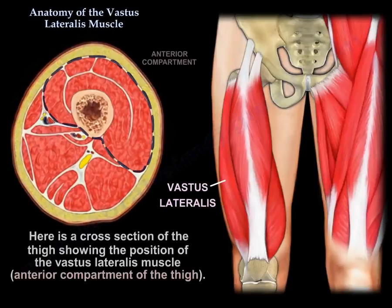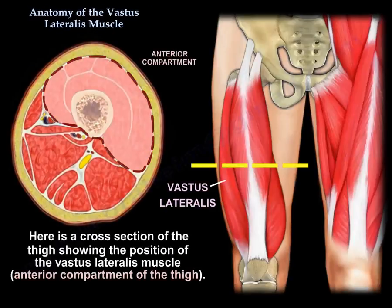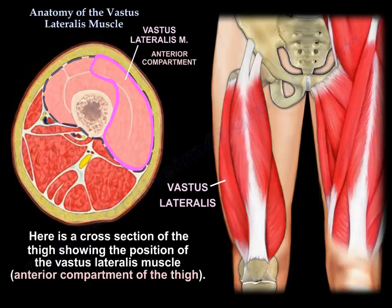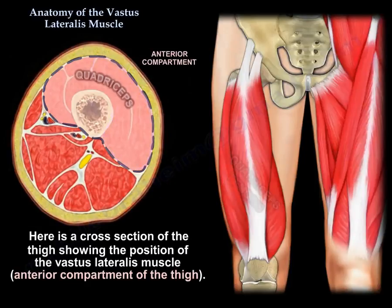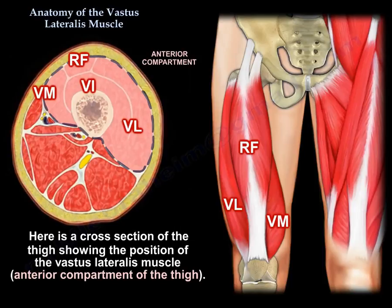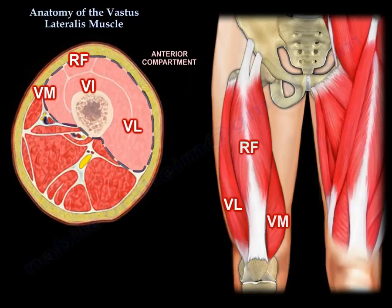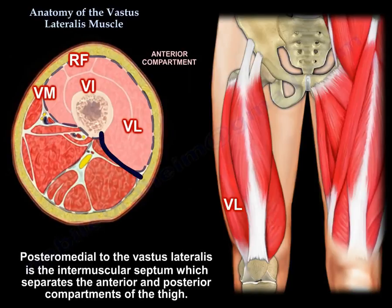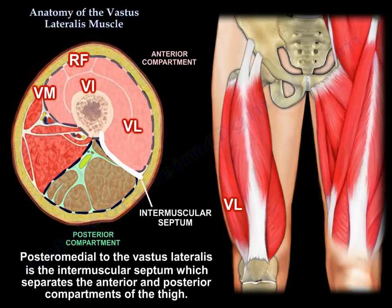This is a cross-section of the thigh. You can see the Vastus Lateralis lies in the anterior compartment of the thigh, where the entire Quadriceps Femoris muscle group is located. Posteromedial to the Vastus Lateralis, there is the intermuscular septum that separates the anterior compartment of the thigh from the posterior compartment.